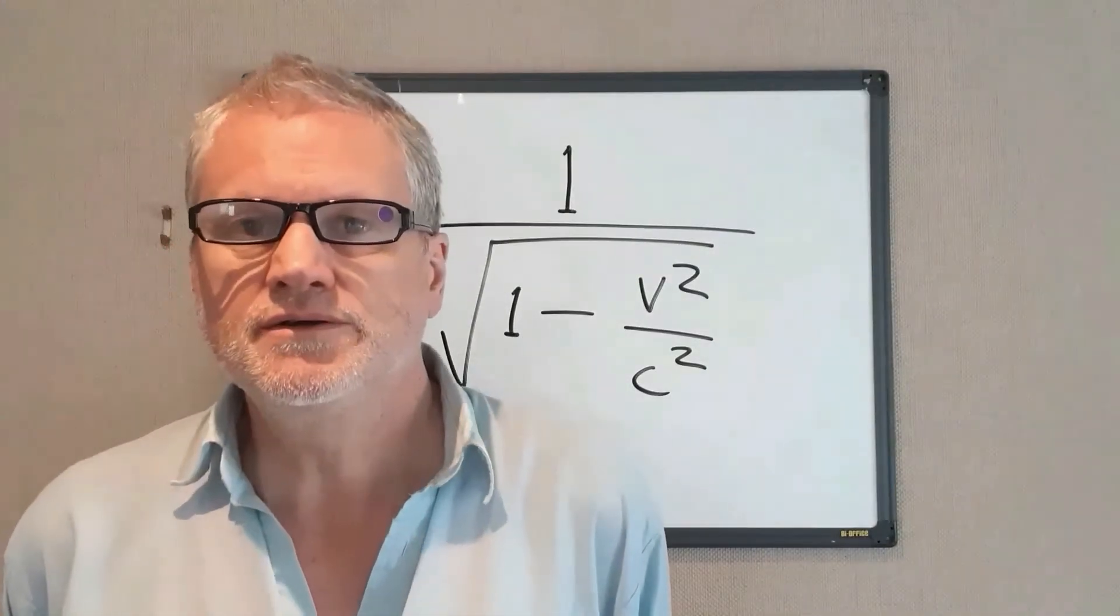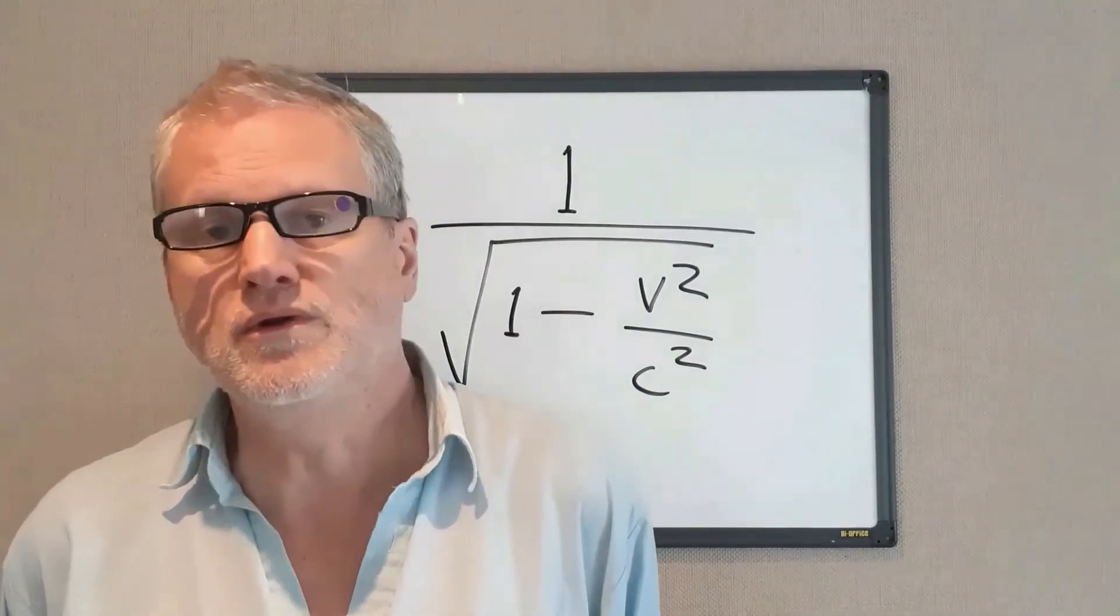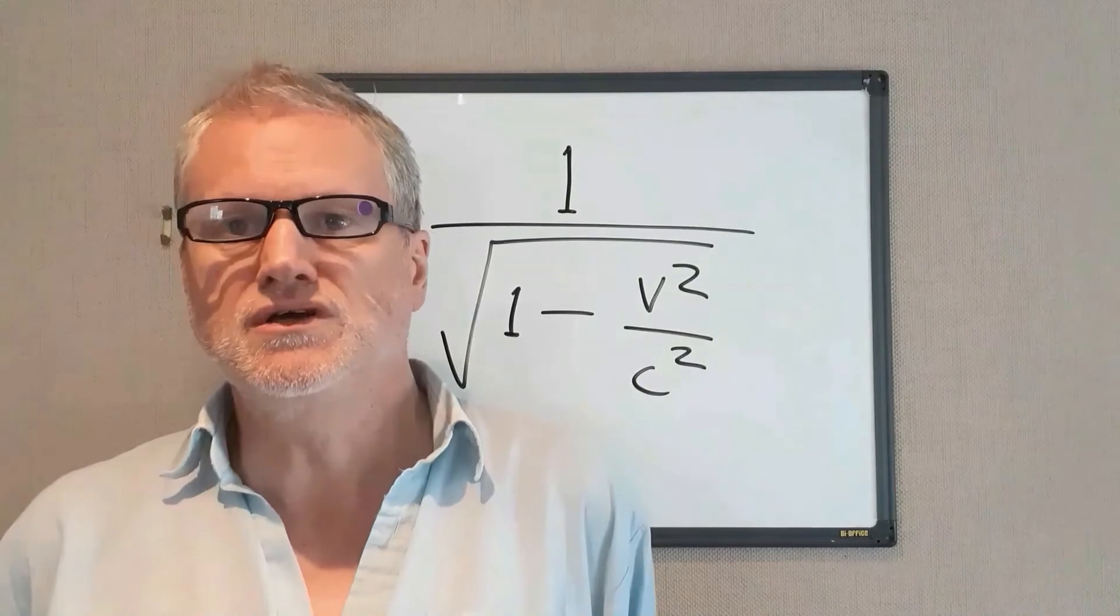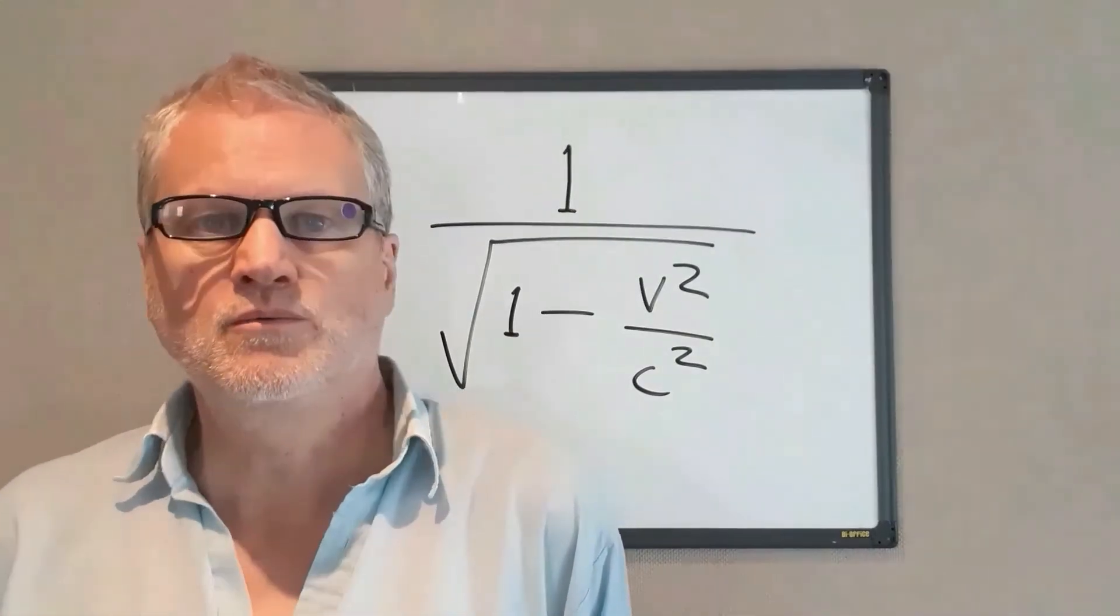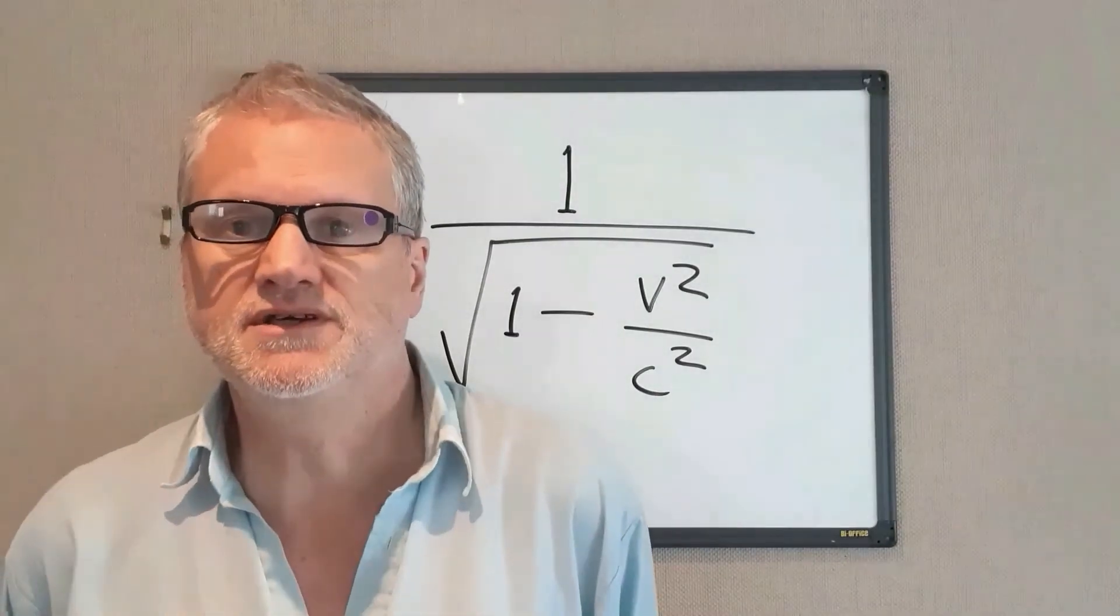Now there are two ways in which this can be derived. In this video I'm going to talk about one of the ways using a so-called light clock. I called it Einstein's clock because it's usually attributed to Einstein, but it doesn't matter.